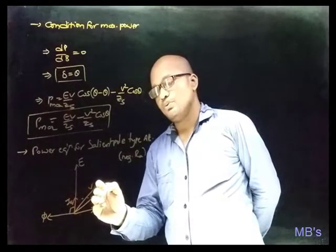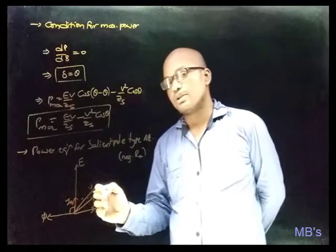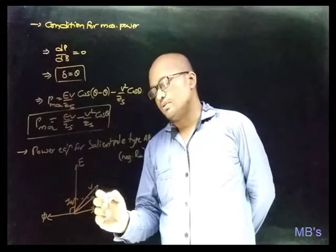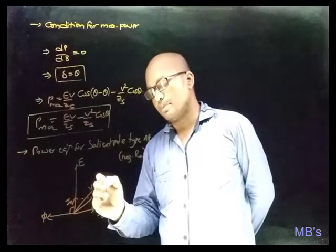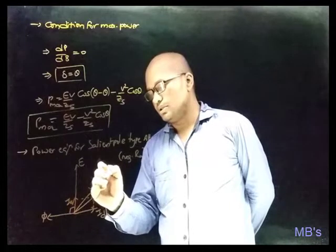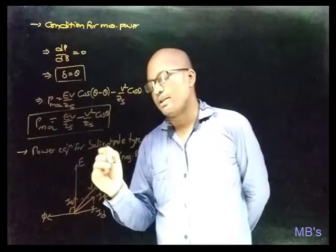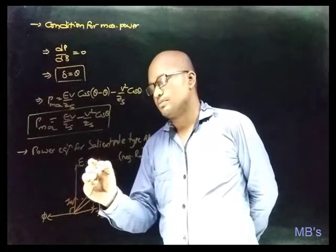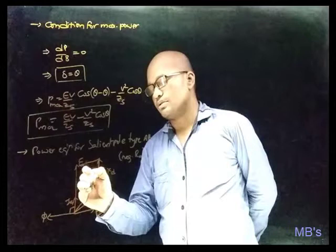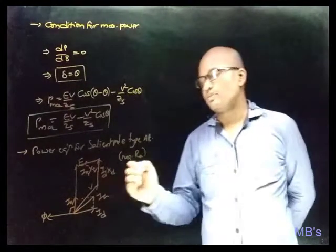The reactance drop due to IQ current is perpendicular to IQ and equals IQ × Xq. The reactance drop due to ID is perpendicular to ID and equals ID × Xd. From the phasor diagram, projecting V along the E direction gives V cos δ, and the equation along the d-axis is E = V cos δ + ID × Xd.